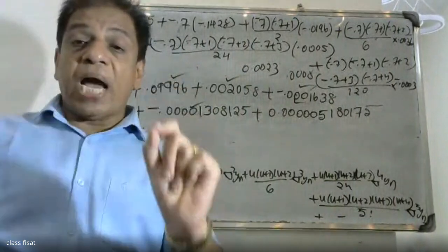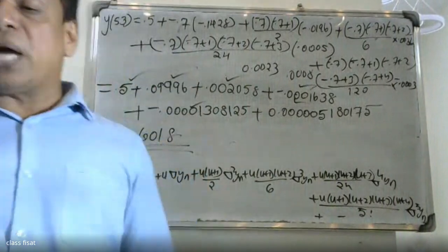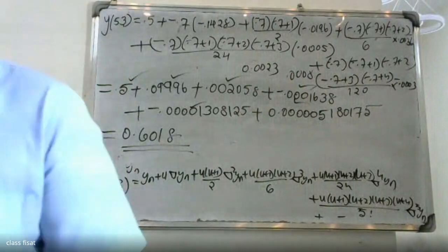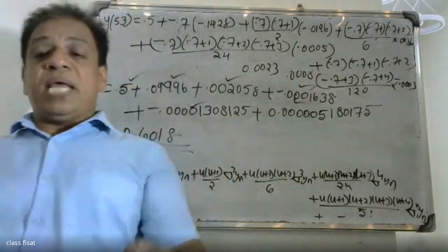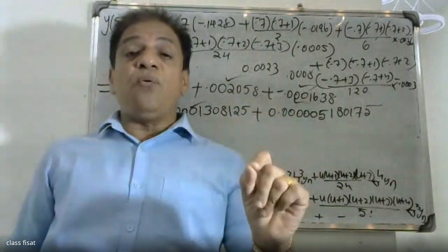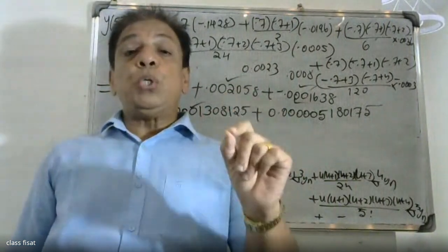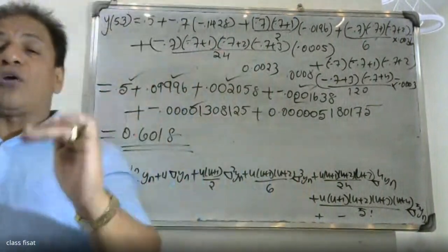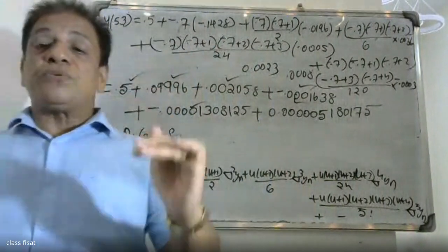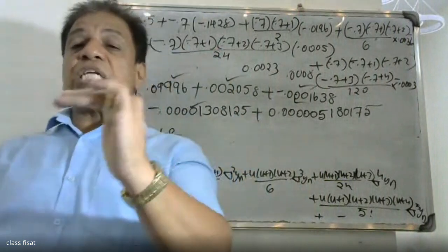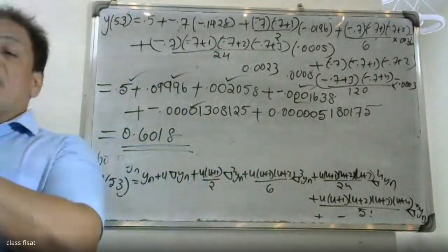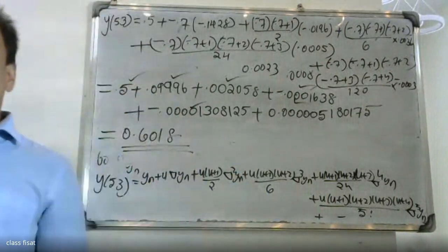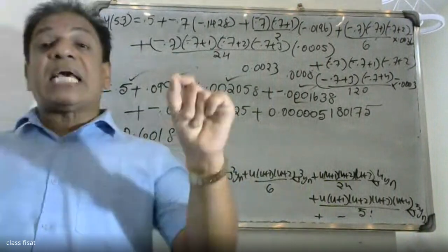Newton's Backward Interpolation Formula is applied to the same point. The formula is: p(x) = yn + u·Δyn + [u(u+1)/2!]·Δ²yn + [u(u+1)(u+2)/3!]·Δ³yn + ... where u = (x - xn)/h. Here x = 53 and xn = 60.